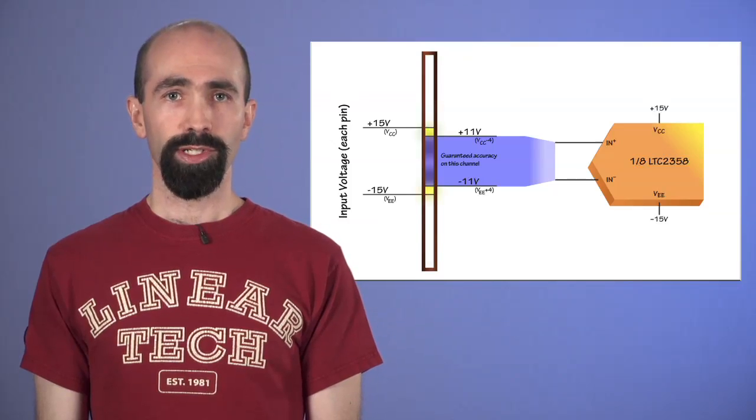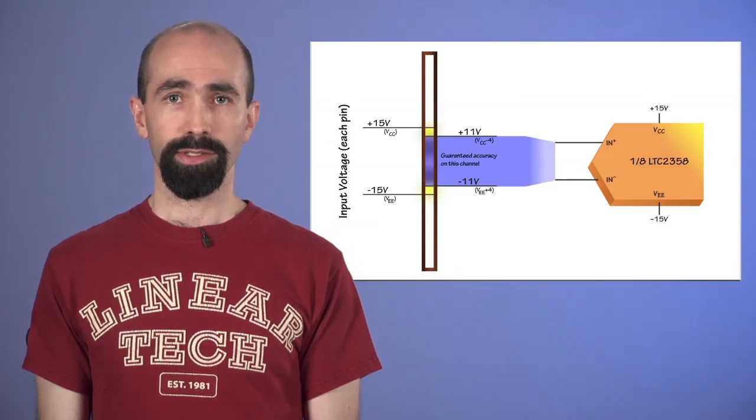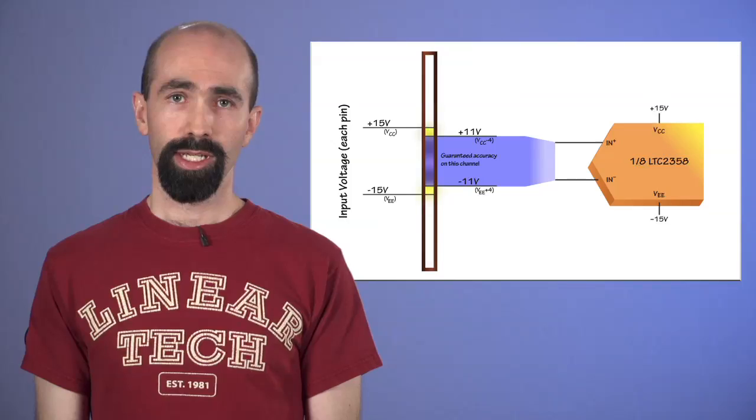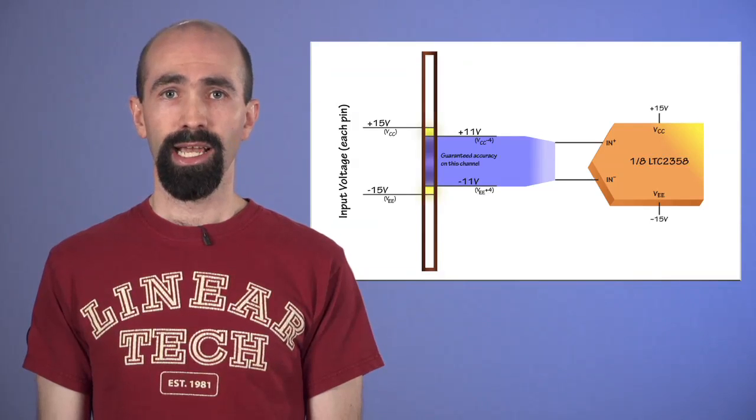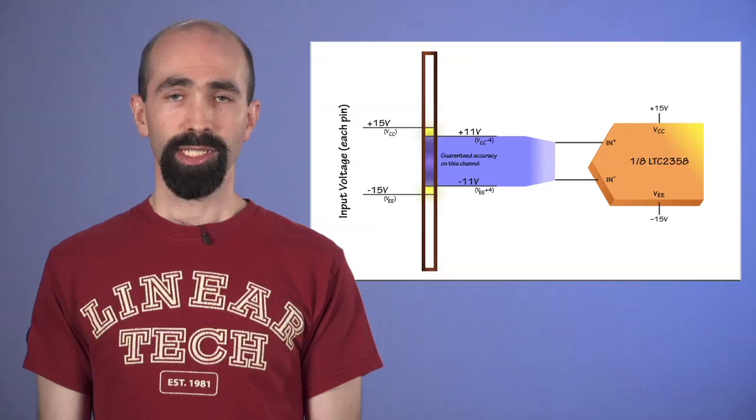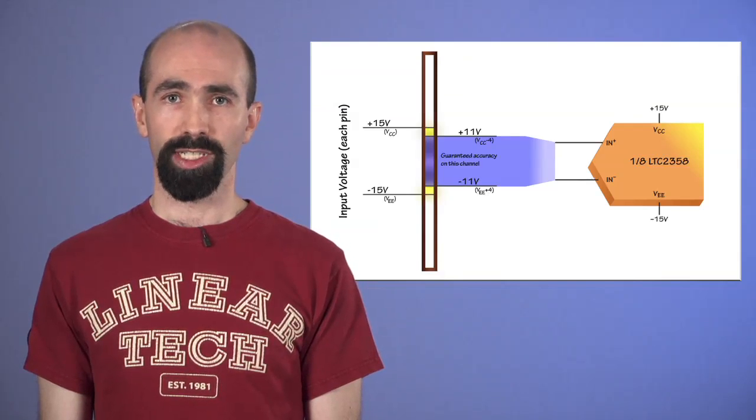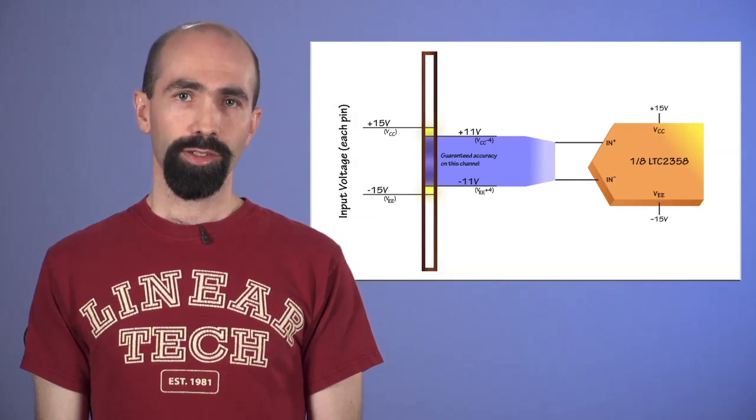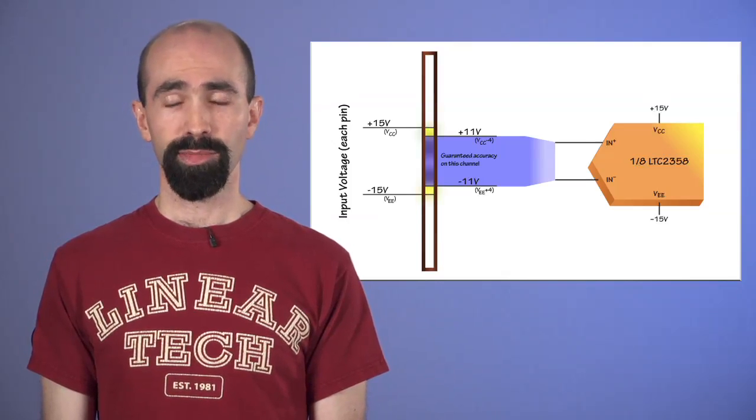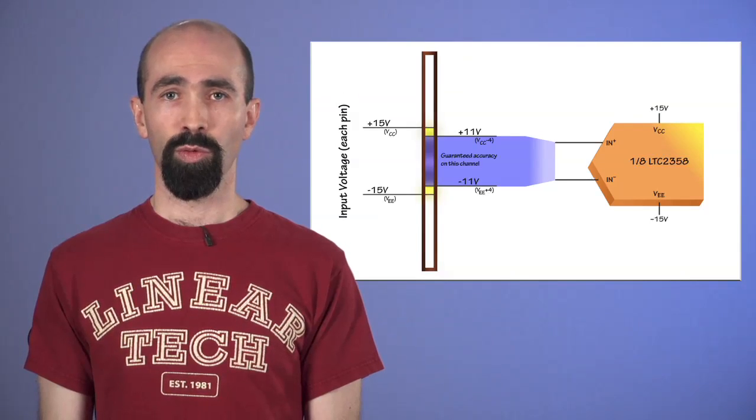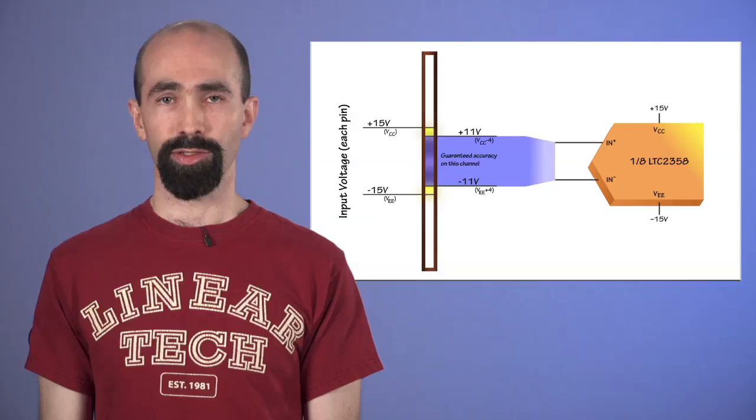In more severe cases, the inputs might be driven beyond the high voltage supplies. For example, if an amplifier supplied from 40 volts drives the ADC, that amplifier might try to drive an input to 40 volts in an abnormal condition. Internal diodes clamp the analog inputs to the high voltage supplies, so it is simply necessary to limit the current to avoid damaging the part or other circuitry.